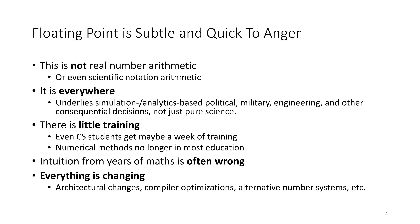There's very little training that people get in floating point. Even computer science students get maybe a week of training in a typical program. Very different from training people my age received as undergraduates or graduate students — there's typically no course where students learn about numerical methods. As a consequence, people rely on their intuition for math, and unfortunately this intuition is often wrong. Making things worse, everything is changing: architectural changes, changes in compilers and optimizations, and alternative number systems such as posits and unums that are potentially breaking existing code.